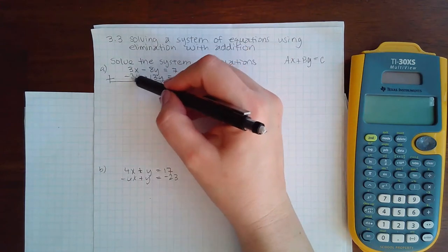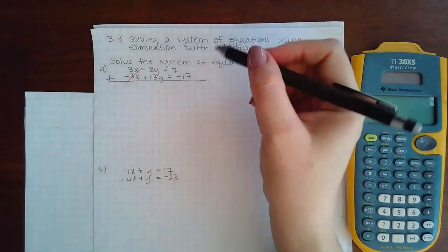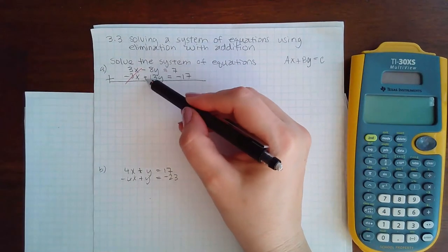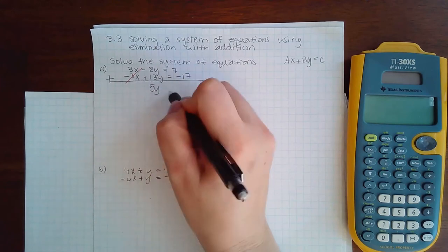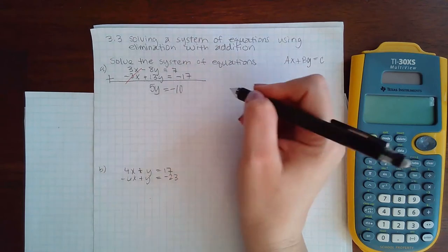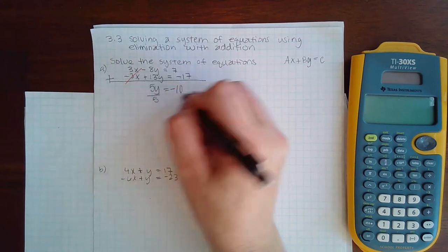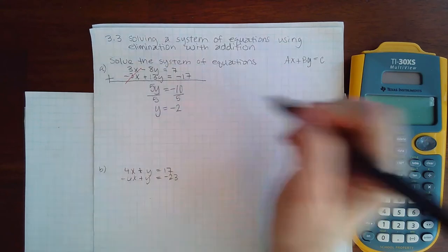3x minus 3x cancels the x's out, then -8y plus 13y becomes 5y, and 7 plus -17 becomes -10. Dividing by 5 on both sides gives y = -2.